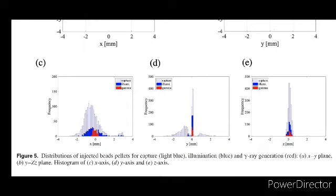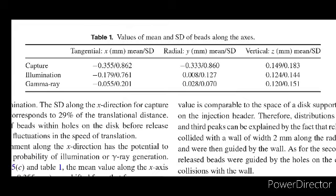For the radial direction, triple distributions of beads can be explained by collisions of beads with an injector wall. From figure 5A, there are triple peaks along the radial direction with peaks at minus 0.8 mm, plus 0.1 mm, and plus 1.0 mm, respectively. The second peak corresponds to the position of the hole on the disk.